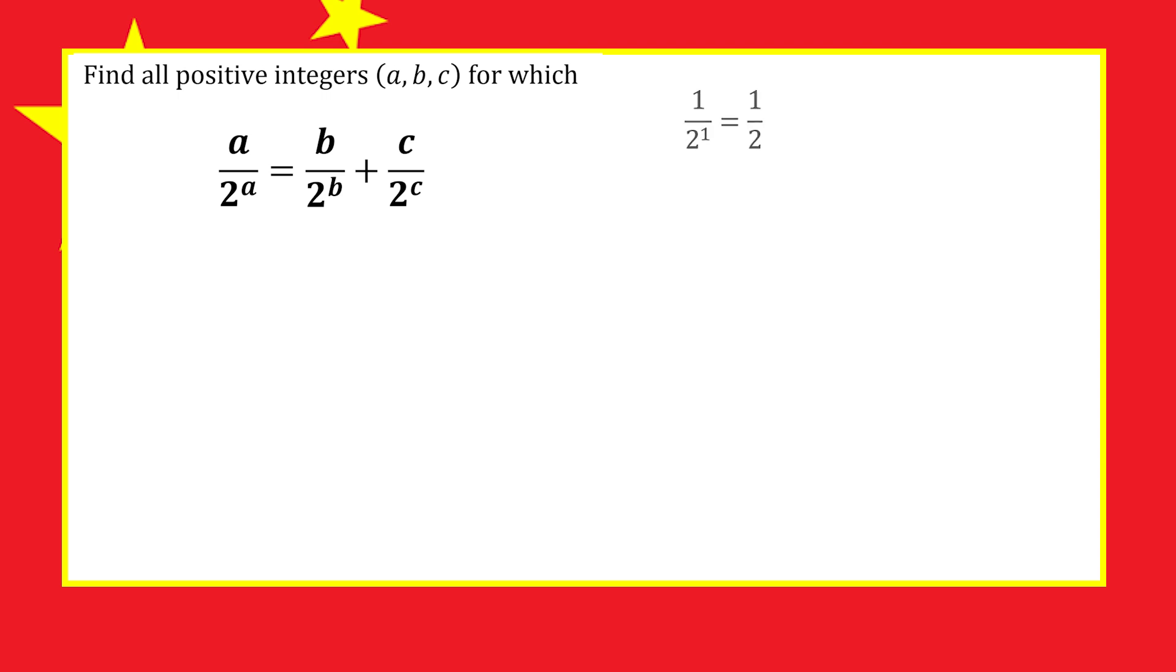For example, 1 over 2 to the 1 is a half. 2 over 2 squared is 2 over 4, which is also a half. 3 over 2 cubed is 3 over 8, and so on.